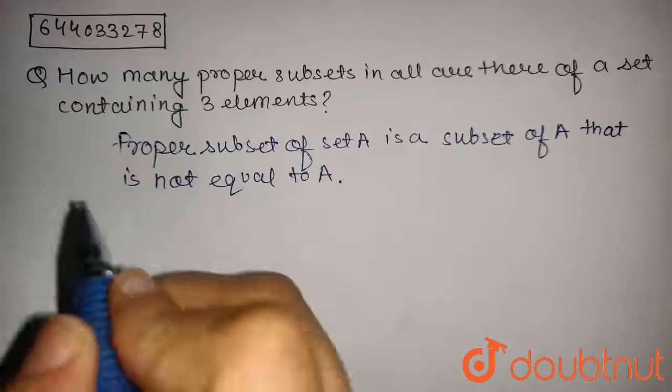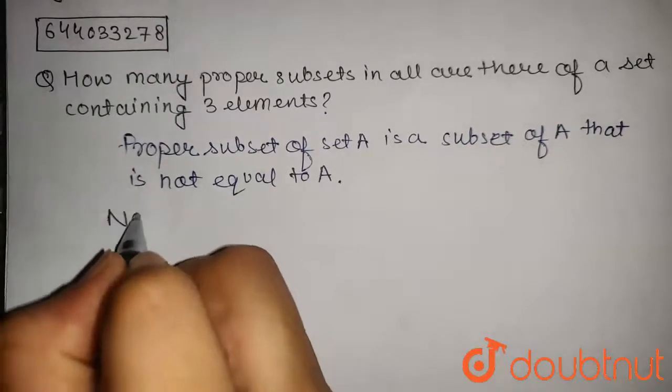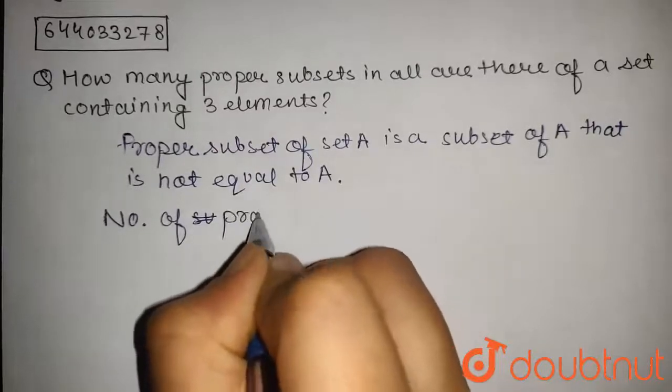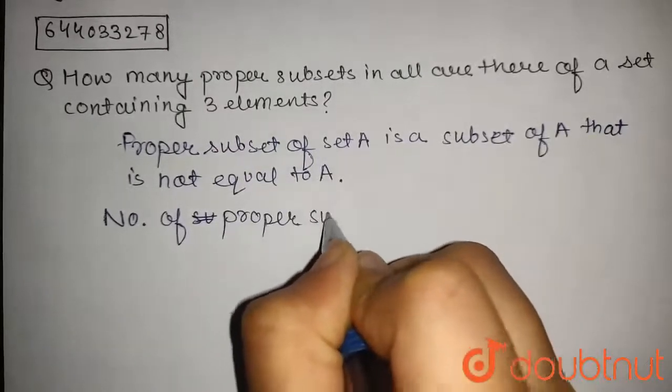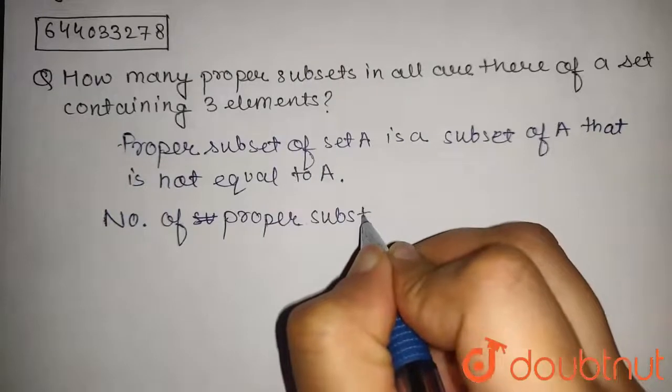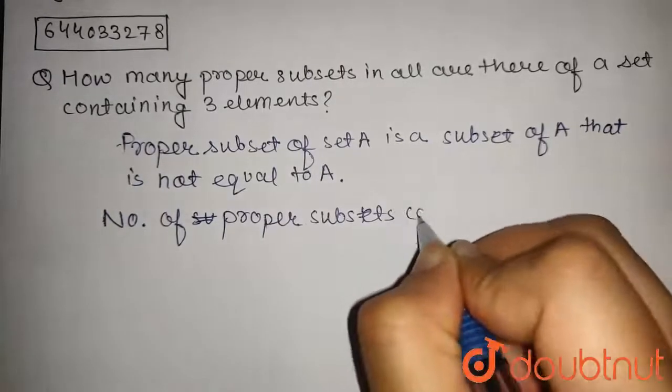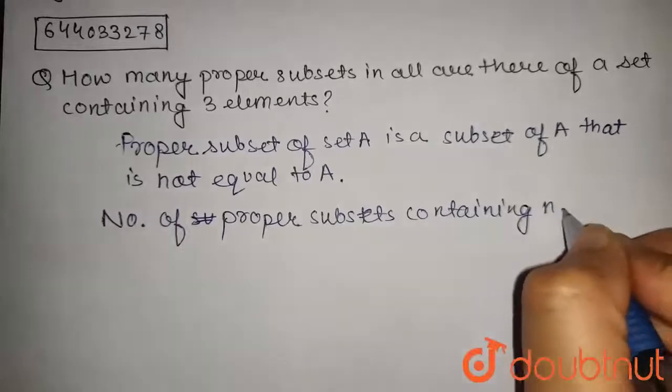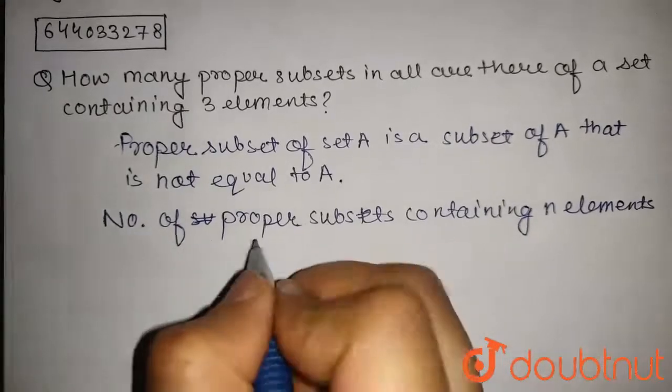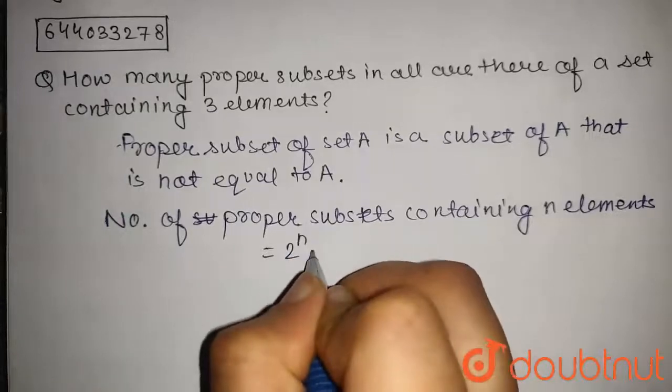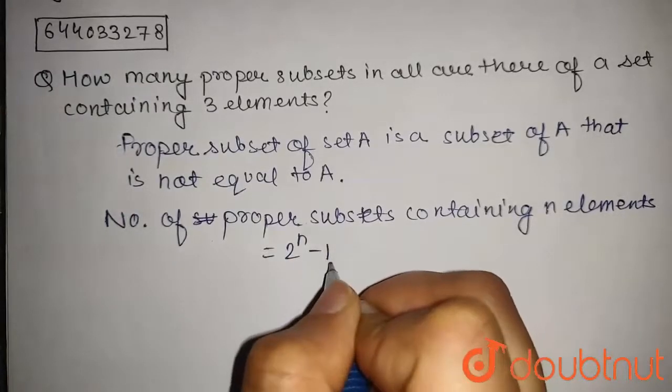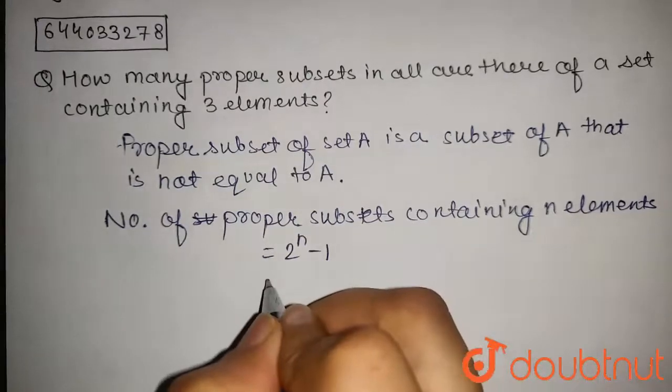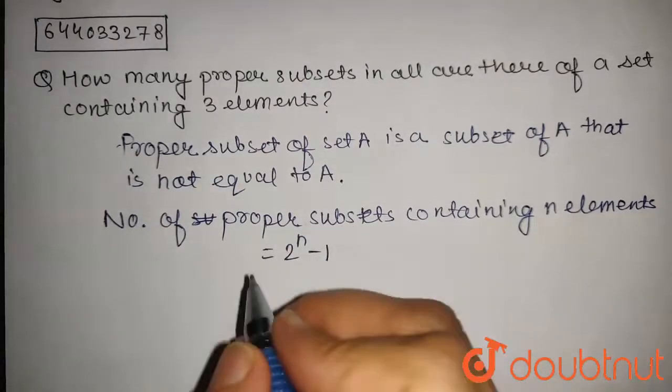The formula for the number of proper subsets containing n elements is 2^n - 1. This minus 1 accounts for excluding the set A itself.